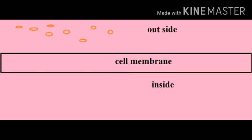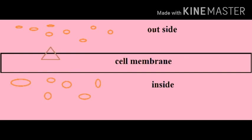The next transportation type is specialized transport, also called carrier-mediated transport. There are two types: facilitated transport and active transport. In facilitated transport, there is a carrier protein in the biological membrane. When the drug binds to the carrier, it is transported across the cell. This works along the concentration gradient and is used for low-solubility drugs.